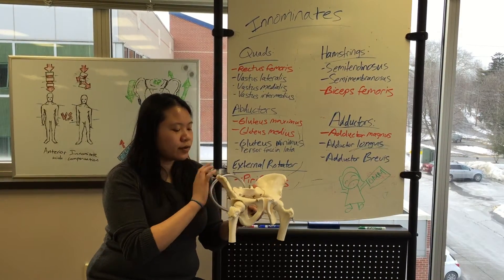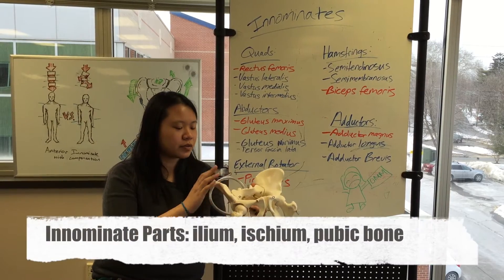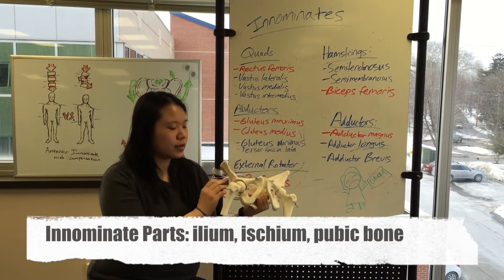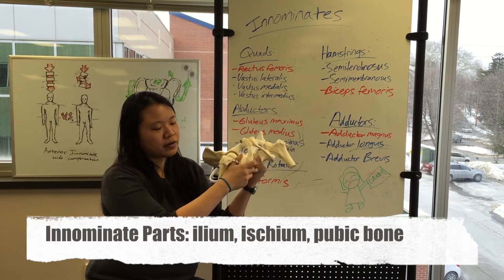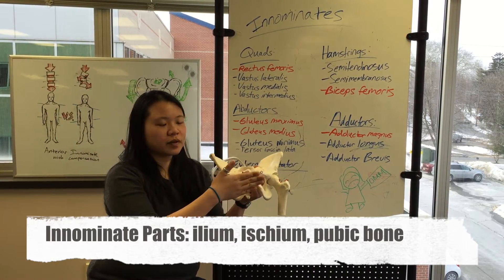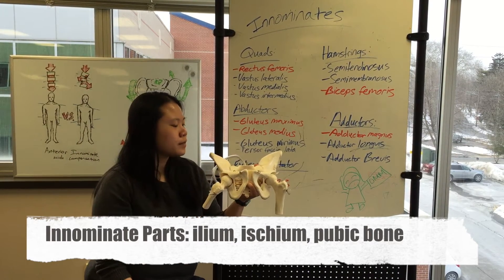Of your inominates, there are three pieces to them. There's the ilium, which is like this wing-shaped part here. There's the ischium, which is the bottom half over here, and the pubic bone, which is up here.